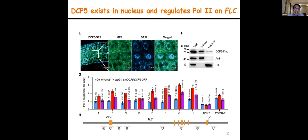We further validated the interaction by protein pulldown and co-IP methods, and these results suggest that these two proteins can interact in vitro and in vivo. For the function, we ordered a DCP5 mutant from NASC — this T-DNA insertion is in the 3' UTR region. We found that if we knock out the DCP5 gene, the plant flowers later and produces more leaves than the wild type. When we complement this mutant with the native gene, the plant flowers at a similar level to the Columbia control. FLC level changes are consistent with the flowering time changes; unspliced FLC is consistent with spliced FLC, suggesting DCP5 mutation may regulate FLC at the transcriptional level.